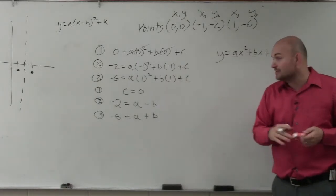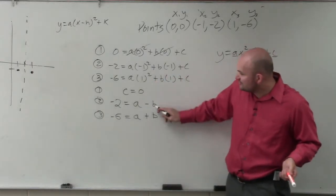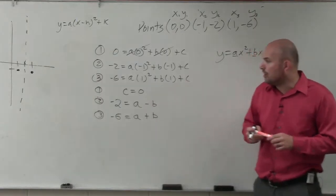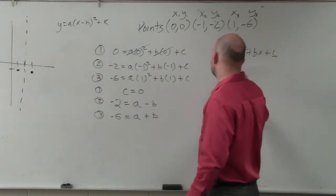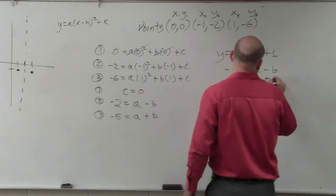Yes, Dana? Elimination. You can use elimination, right? You can use substitution. But why use substitution when you have variables with a positive and negative and they have the same coefficients? So all I would simply do to solve this problem is add negative 2 equals a minus b and add negative 6 equals a plus b.